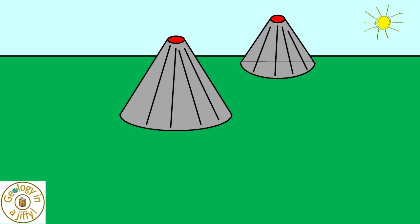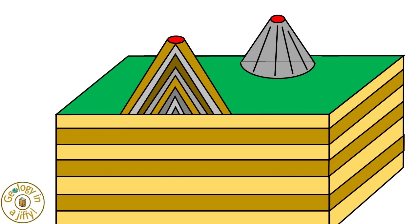Take this landscape, upon which are volcanoes, which when studied and seen in cross-section, we can see that the land formed by layers of rock building up, then the volcanoes forming on top of this.